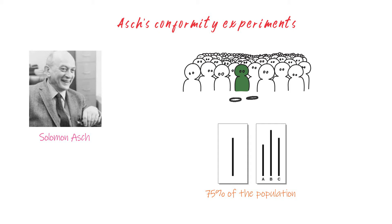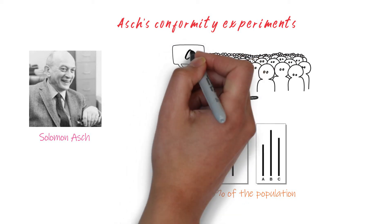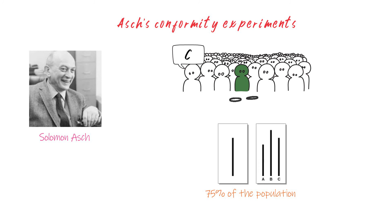Asch's experiment also looked at the effect that the number of people present in the group had on conformity. When there were just one or two actors in the group, most test subjects did give the right answer. Conformity only started when the group became larger than three. Asch also tested the impact of one actor giving the right answer while others gave the wrong answer. In this case, the test subject often gave the right answer. This showed that social support is important in combating conformity.